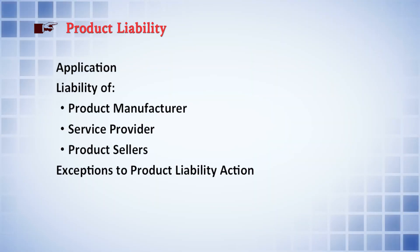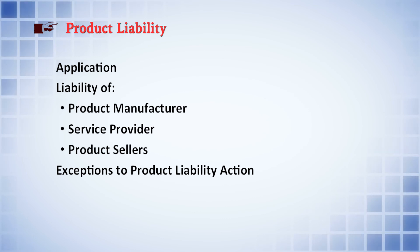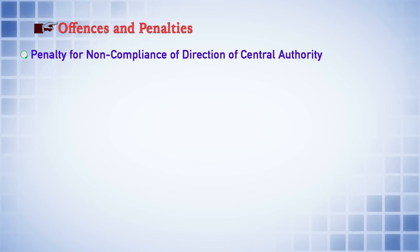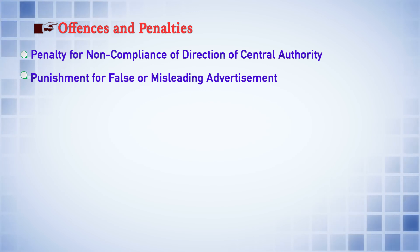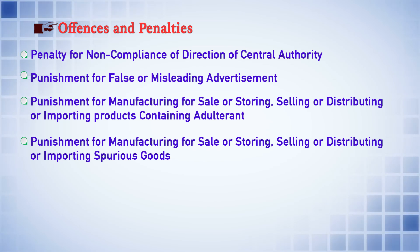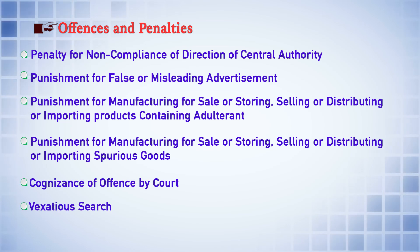Product liability: the law provides for initiating liability against the product manufacturer, service provider, and product sellers. Regarding offenses and penalties — the law provides penalties for non-compliance with directions of the central authority, punishment for false or misleading advertisements, punishment for manufacturing for sale or storing, selling, distributing, or importing products containing adulterants, punishment for manufacturing or selling spurious goods, and provisions for cognizance by courts, vexatious complaints, and search and seizure. With this, we conclude this presentation on the salient features of the Consumer Protection Act.